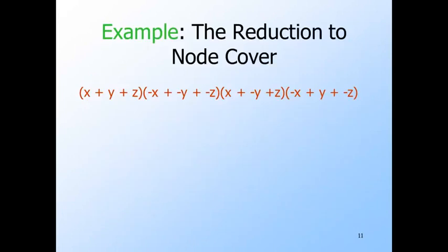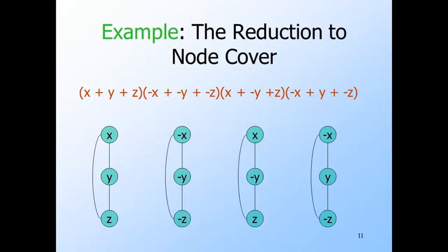Here's an example of an instance of 3SAT with four clauses. We'll construct the graph that has a node cover of eight nodes if and only if this expression is satisfiable. Here's the column for the first clause. The literals of the first clause are X, Y, and Z with no negations, so those are the labels of the three nodes in this column. Similarly, we construct a column for each of the other clauses. It is convenient that all four clauses have the same three variables in order, either negated or not, so this graph will be easier to understand than might otherwise be the case.